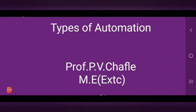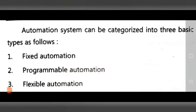Hello everyone. Today we see the topic of types of automation. Automation systems can be categorized into three basic types: first is fixed automation, second is programmable automation, and third is flexible automation. We will see a description of each type one by one.